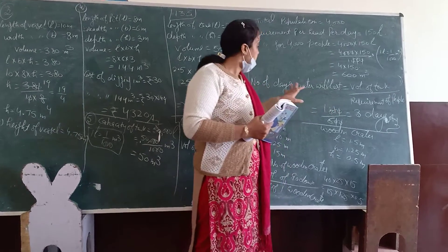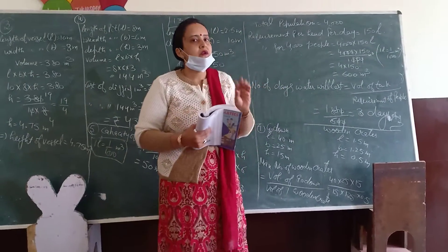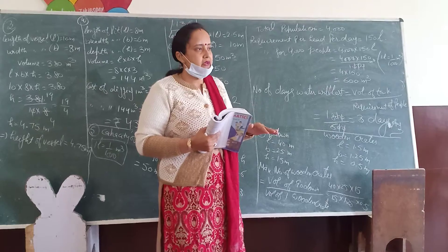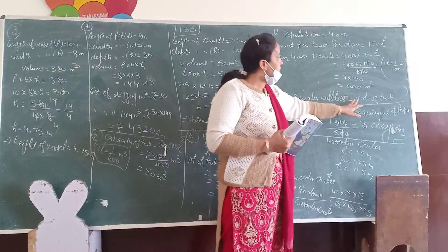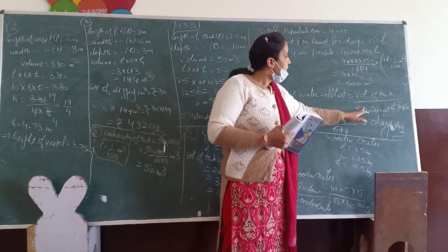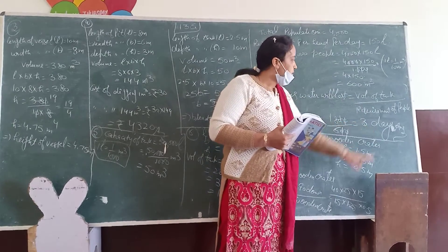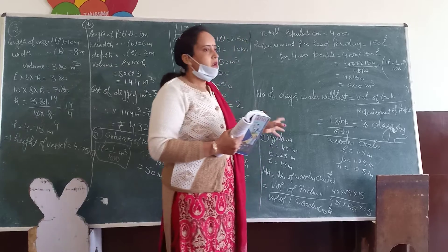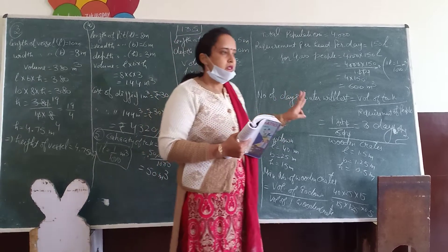We have to get the number. Volume divided by required. So how far we can do this? 4,000 times 150 equals 600,000. Divided by 1,000. This gives us the amount. Three days, what is the total? Three days.